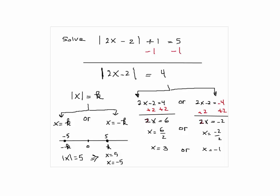We can easily check our answer to see if this makes sense. If X equals 3, substitute that 3: 2 times 3 equals 6, 6 minus 2 equals 4. Absolute value of 4 equals 4, 4 plus 1 equals 5. So that checks out.